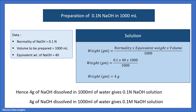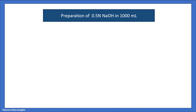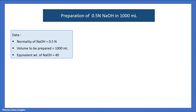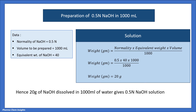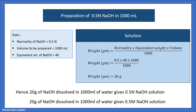Since molarity equals normality for NaOH, this is also a 0.1 molar solution. Example 2: Preparation of 0.5 normal NaOH in 1000 ml. Data: normality = 0.5 N, volume = 1000 ml, equivalent weight = 40. Weight = 0.5 × 40 × 1000 / 1000 = 20 grams. Hence, 20 grams of NaOH dissolved in 1000 ml of water gives 0.5 N and 0.5 M NaOH solution.